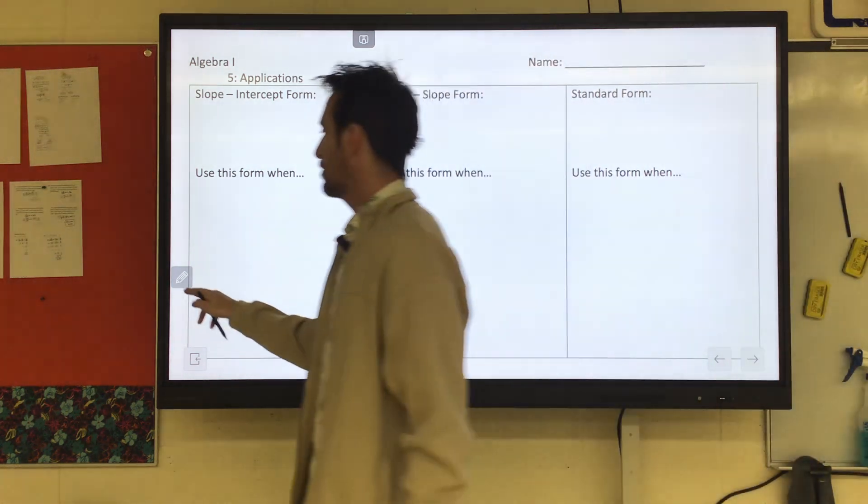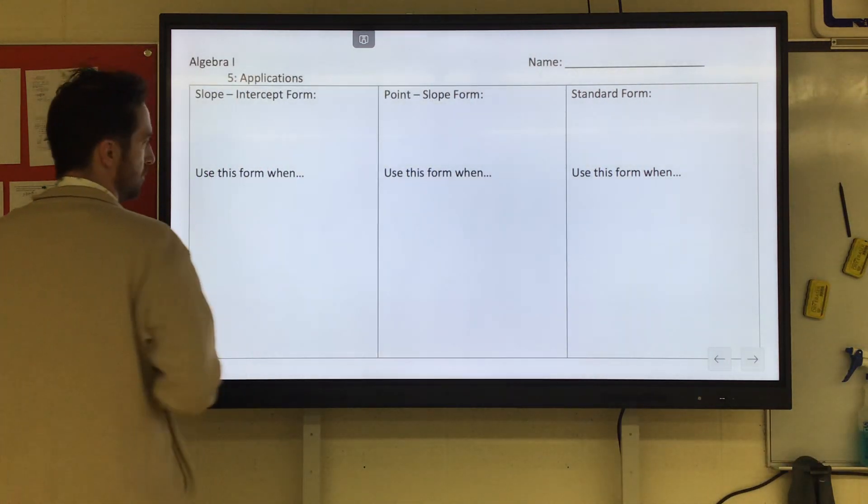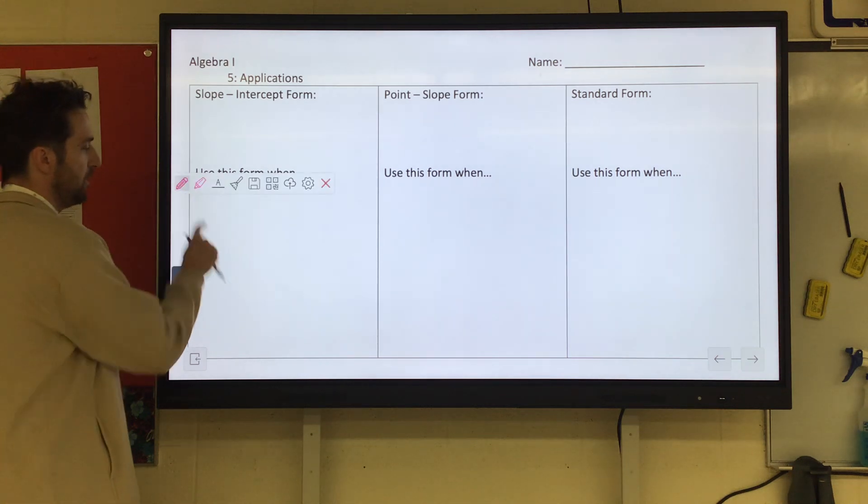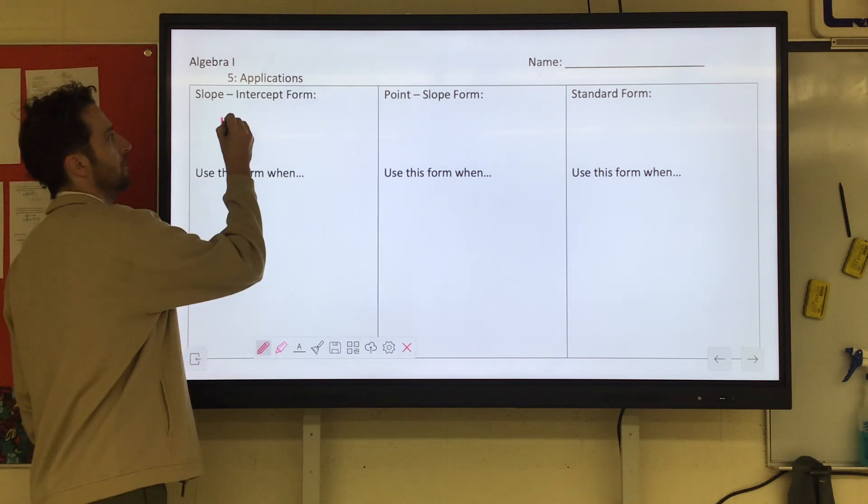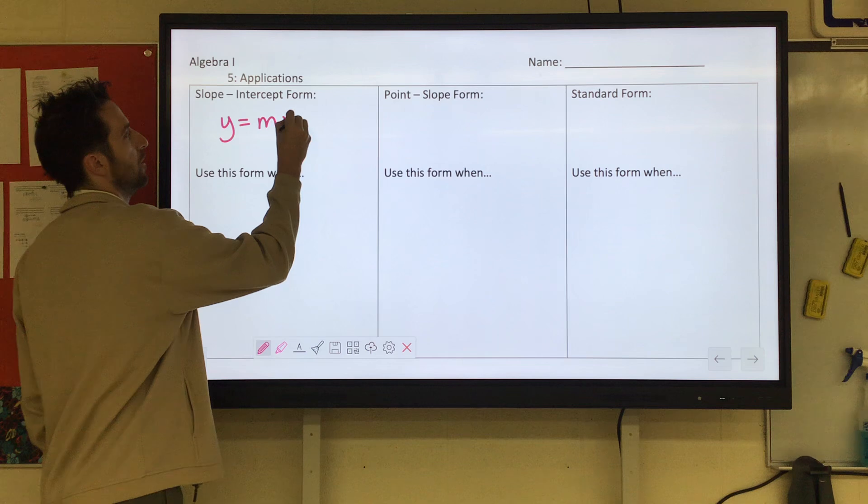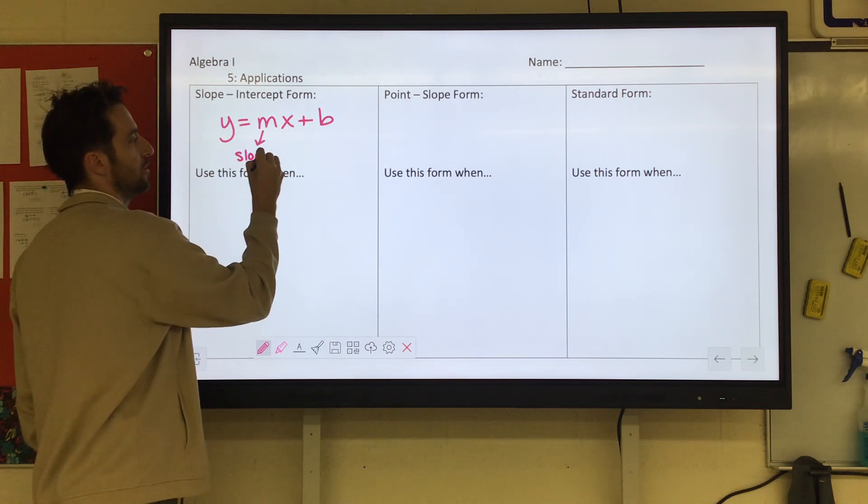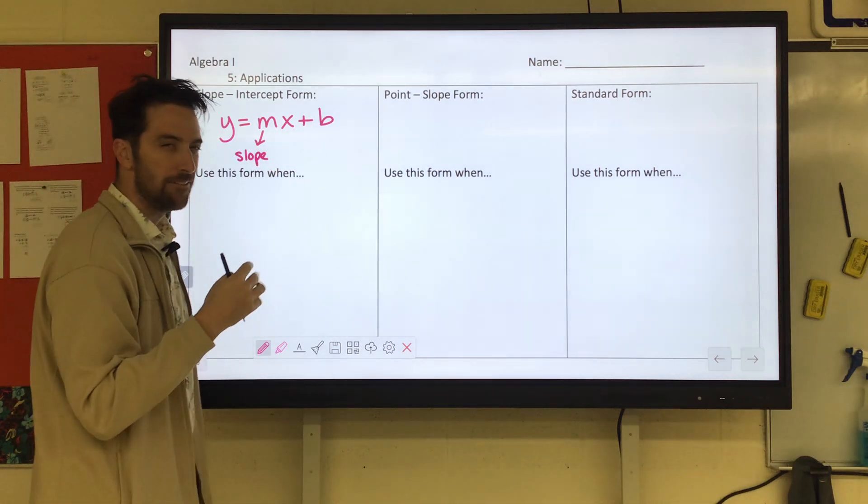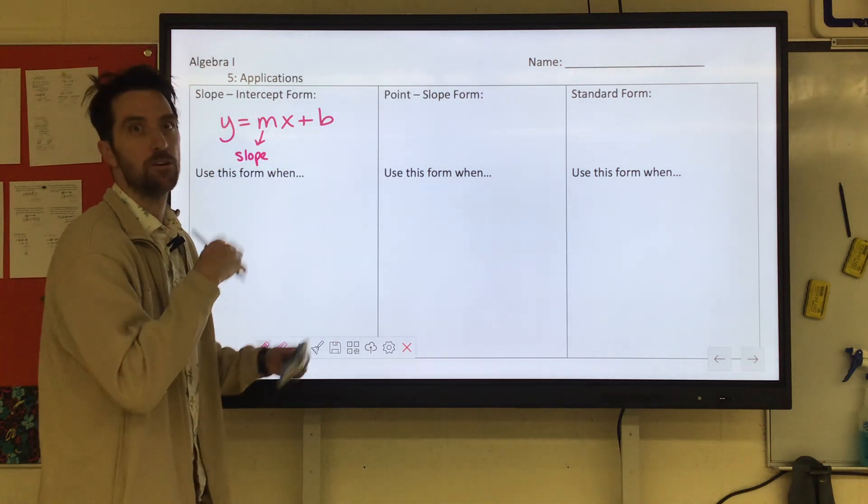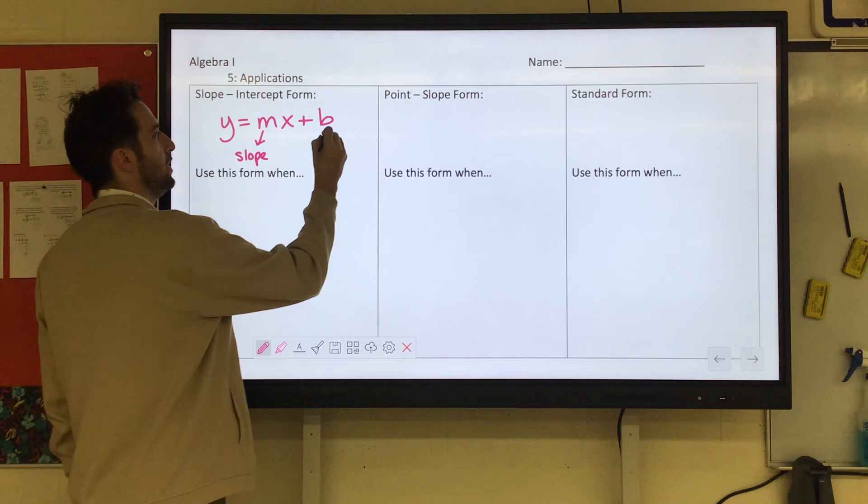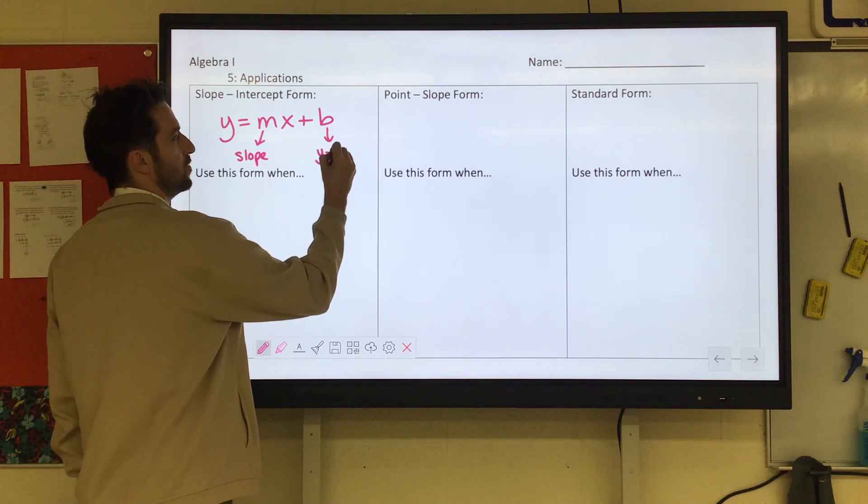So a quick reminder, slope-intercept form is y equals mx plus b. And remember that m represents our slope. Slope is often given as a rate, like the cost per something. And then b is the y-intercept. It's the starting amount.